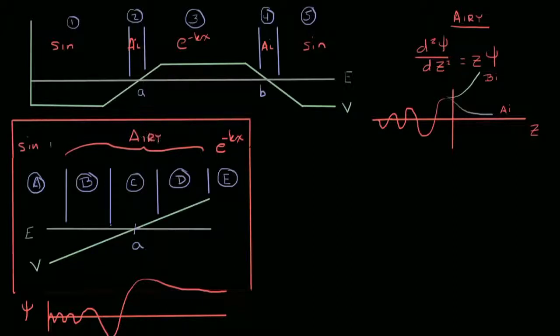Our difficulty is how do we connect a sinusoidal base function, which we know from the WKB approximation, to this Airy function, and how do we connect the exponential decay function, which we know, to the Airy function? In other words, how do we bring these together so that our slopes and our values all match up? This is the challenge of connecting the Airy function.